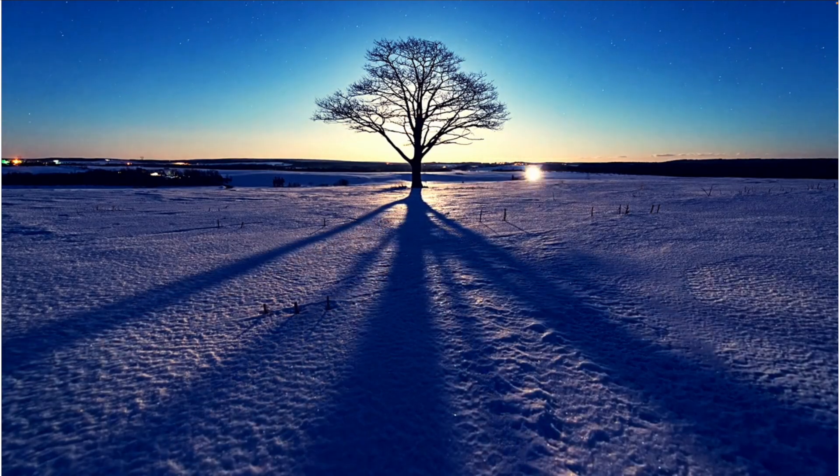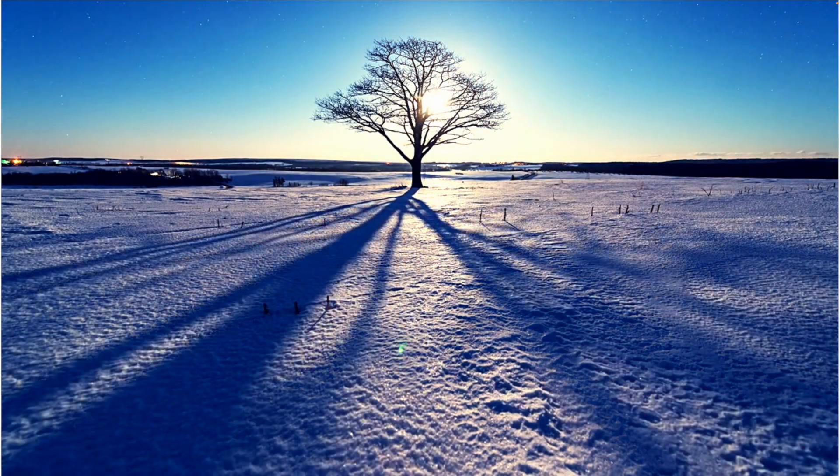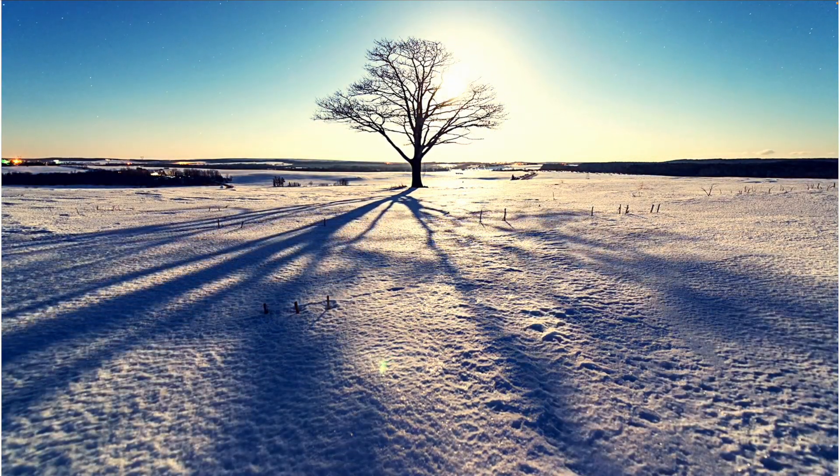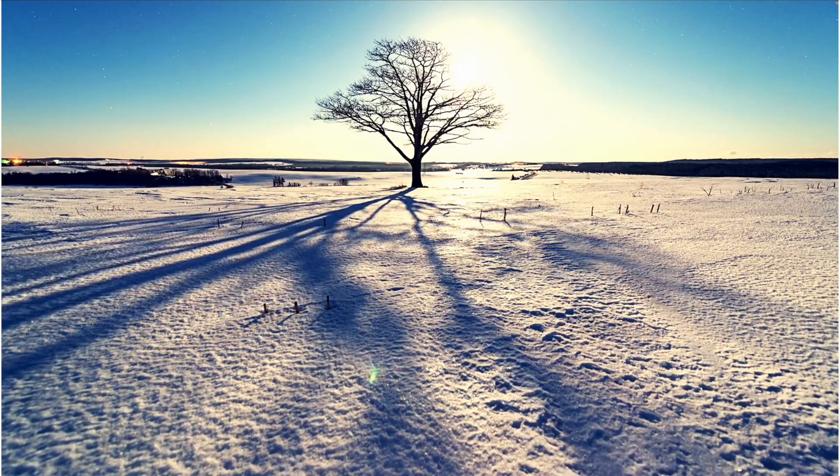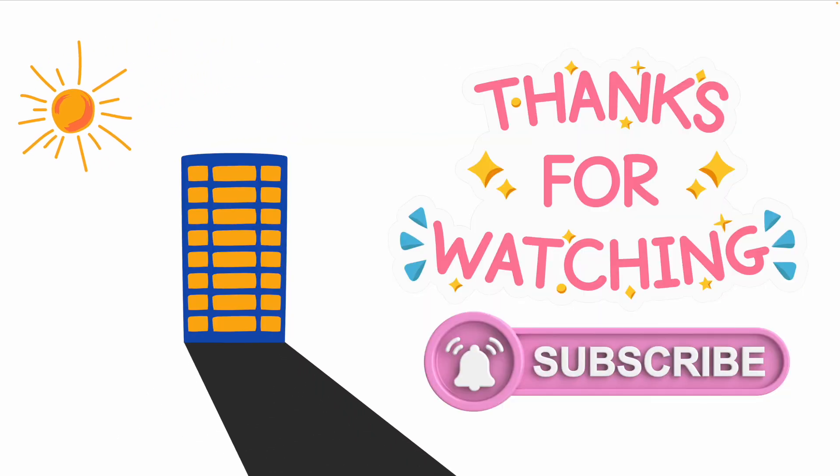So here is what we have learned. We can see things because they make their own light or reflect light into our eyes. And shadows appear when light is blocked. Their size, shape, and position depend on where the light source, object, and screen are placed.